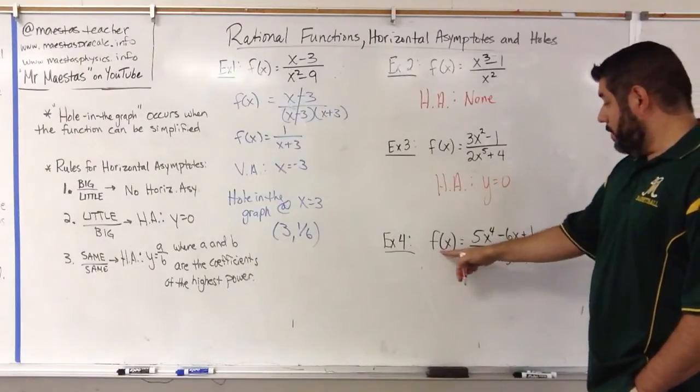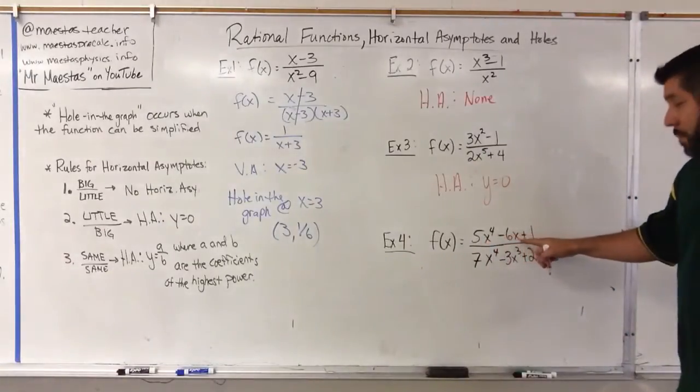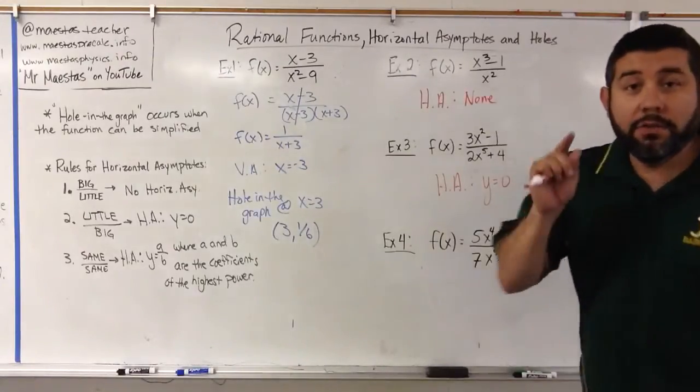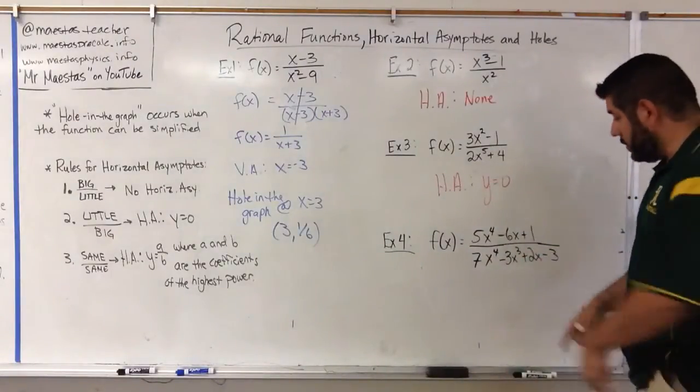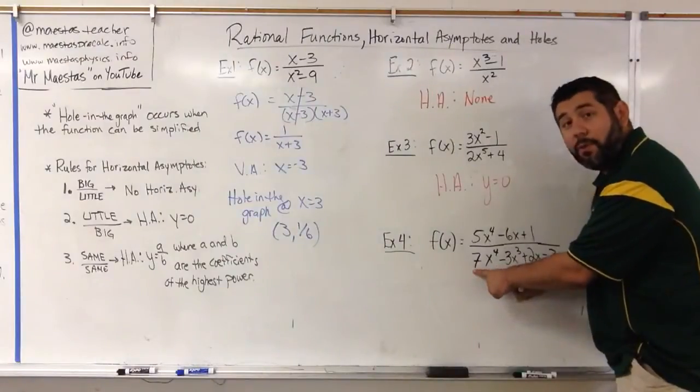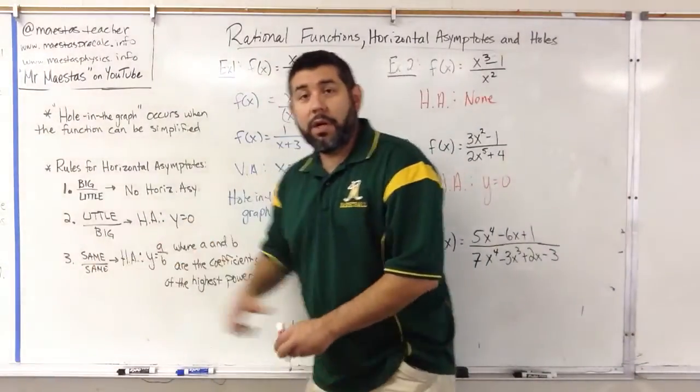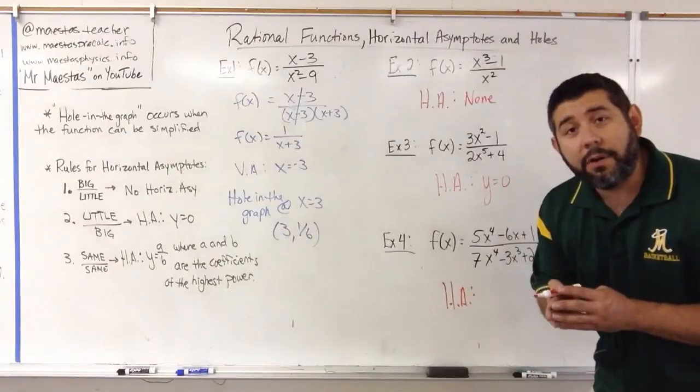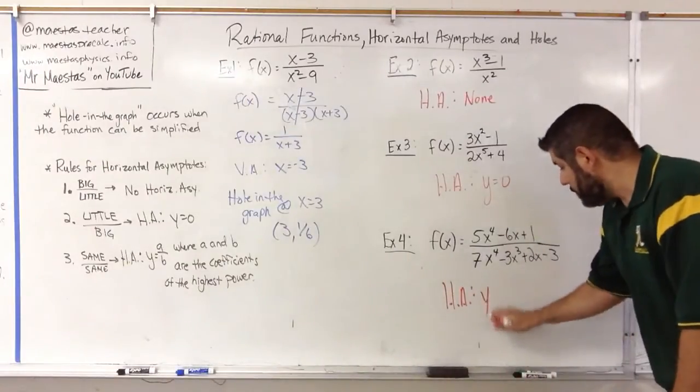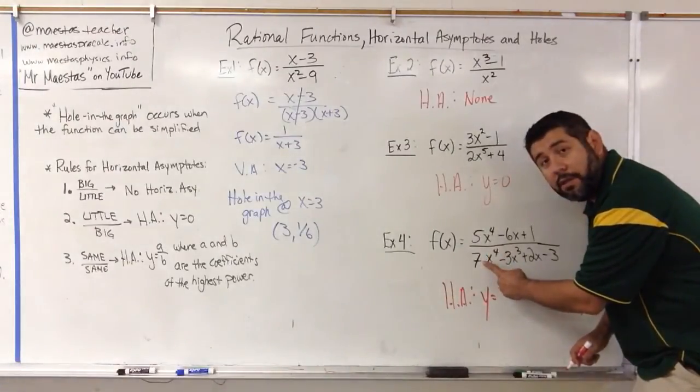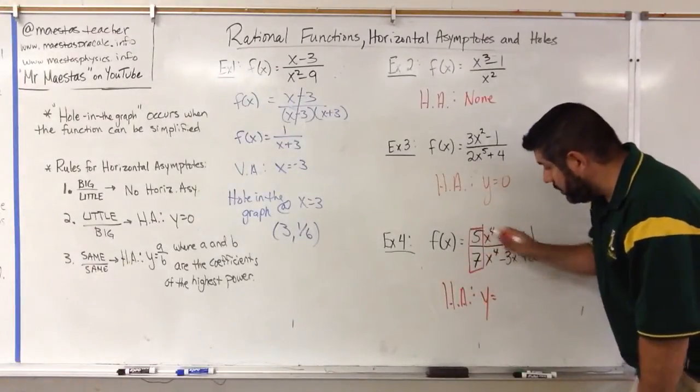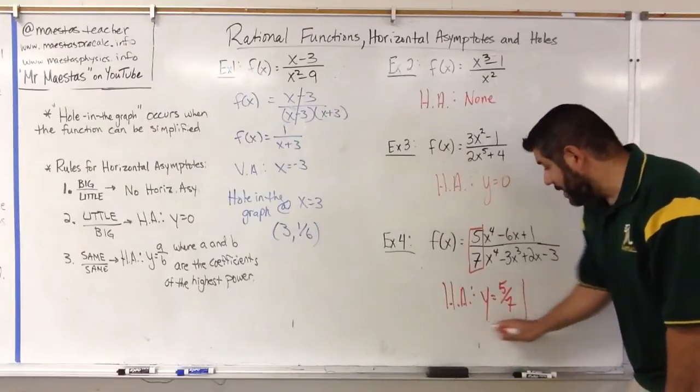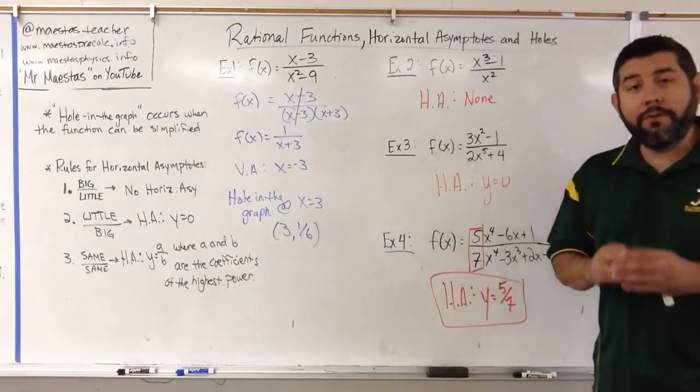f(x) equals 5x to the fourth minus 6x plus 1 over 7x to the fourth minus 3x cubed plus 2x minus 3. Again, zone in on the highest power of x. Highest power of x here is x to the fourth. Highest power of x here is x to the fourth. They're the same. It's simple guys, it's simple. Just look at the numbers in front of the highest power of x, the coefficients. 5, 7. The horizontal asymptote is going to be 5/7, y equals 5 over 7. That's it. Just look at those coefficients and you're done.